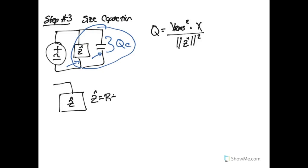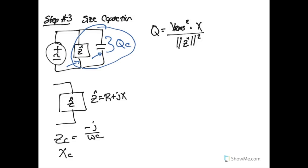Generally, a load Z always has a real element and a reactive element. For the capacitor we are inserting, the impedance is -j/(ωC), and so the reactive element is simply the imaginary component: negative one over ωC.